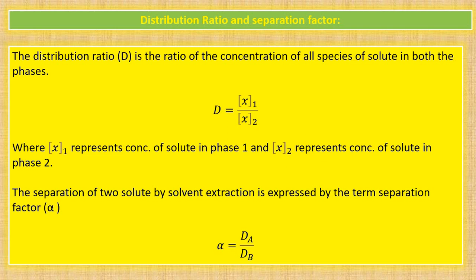Next is the separation factor. The efficiency of separation is given by the separation factor, represented by alpha. The separation factor is the ratio of the distribution ratio of both solutes: D_A divided by D_B gives alpha. Alpha is the separation factor.